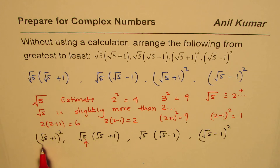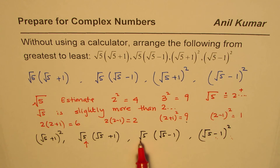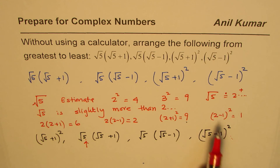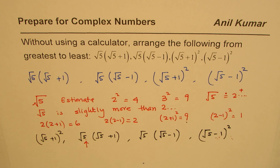The same logic applies to the smaller numbers. Multiplying two smaller numbers gives an even smaller result, so (√5-1)² is the least. Whether by estimation or logical reasoning, you can arrange them in the correct order. I hope that helps. I'm Anil Kumar — please share and subscribe. Thank you and all the best.